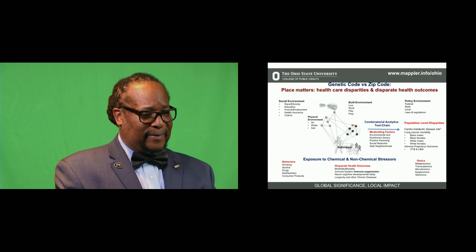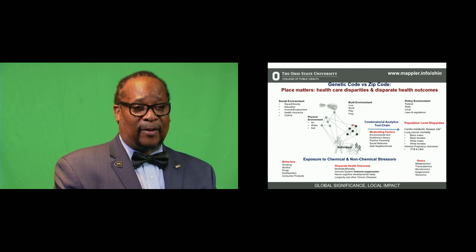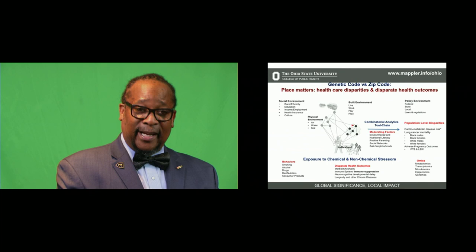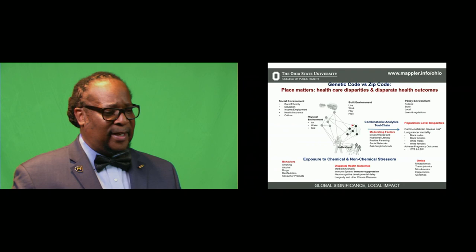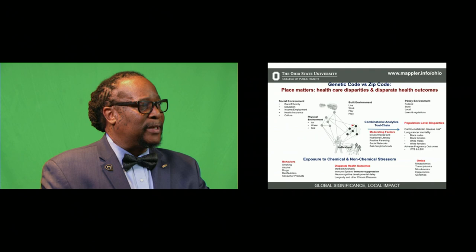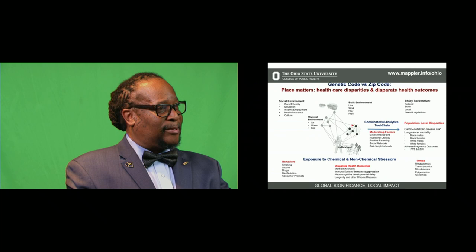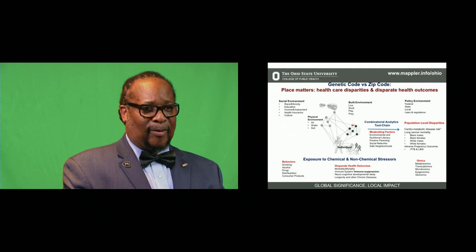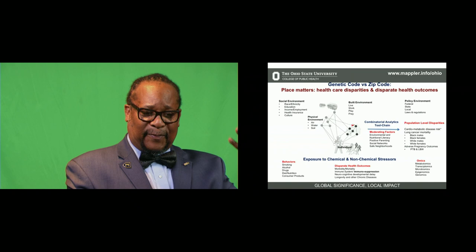Not only do you have to consider the built environment, one has to also consider the social environment — where we talk about the social determinants of health: race, ethnicity, education, income, whether or not you have health insurance, and the general culture. This then comprises the built, natural, physical, and social environment in which individuals live. Individuals are also relegated to a particular policy environment, starting at the local and state municipality level and moving up to the federal level — with various laws and regulations governing land use being extremely relevant.